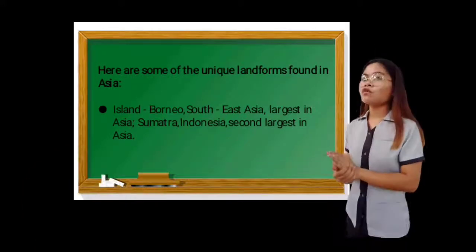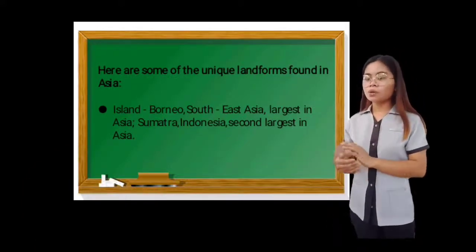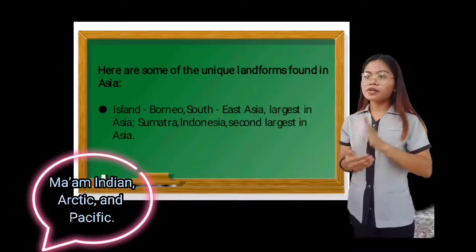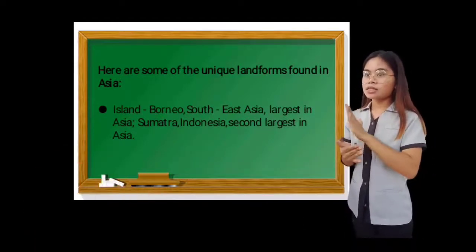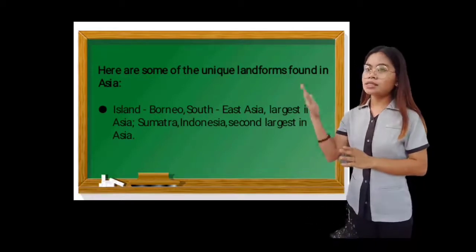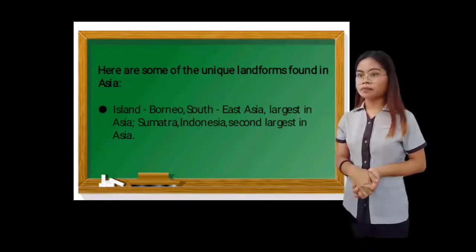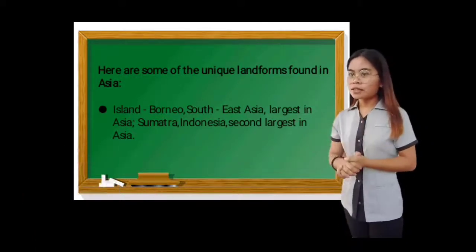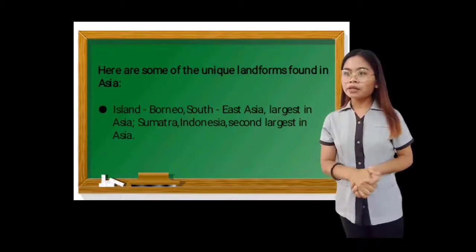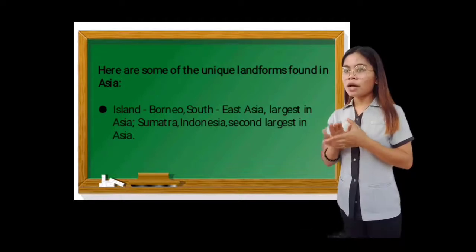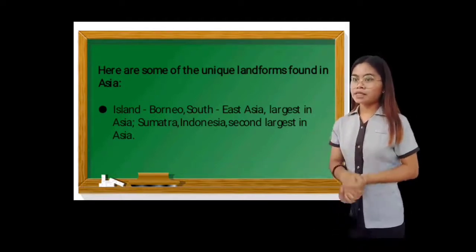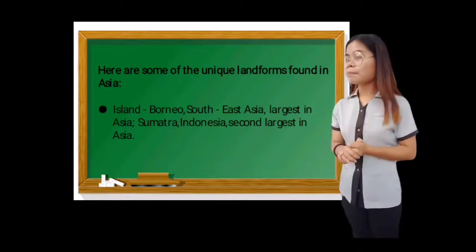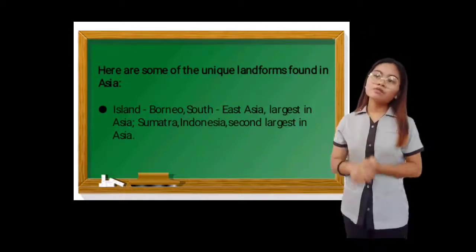Now let's go to the forms of water. Oceans — look at your map. The rivers are the sea and the longest in Asia. Lake — what is the largest lake in the world? That's right. In the Gulf are the Persian Gulf, Islam, Turin, Lingayen, Davao, and Gulf of Telan. While in bay, the Bay of Bengal is the largest in Asia, and Manila Bay. Give me a waterfall. Very good.